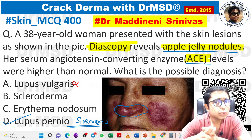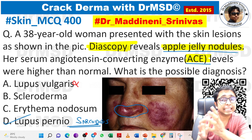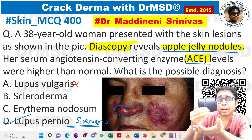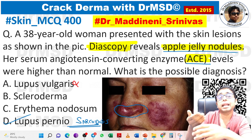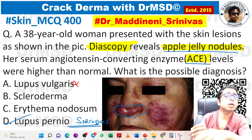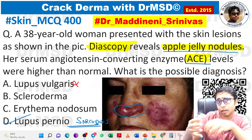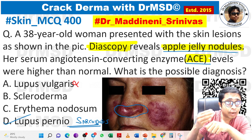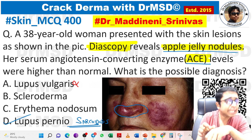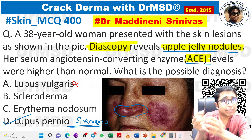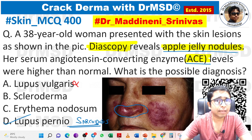Clinically, lupus vulgaris and lupus pernio can be easily differentiated. Lupus vulgaris lesions have one advancing end involving normal skin and another end undergoing regression with atrophic scarring. Unlike that, lupus pernio is not going to have such a picture.